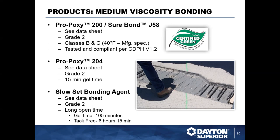Pro Poxy 200 and Sure Bond J58 are Grade 2, Class BC, rated down to approximately 40°F, tested and compliant per CDPH v1.2 — a certified green product. Pro Poxy 204 features a 15-minute gel time, and there is also a slow-setting bonding agent with a gel time of approximately 105 minutes and tack-free in about six hours.